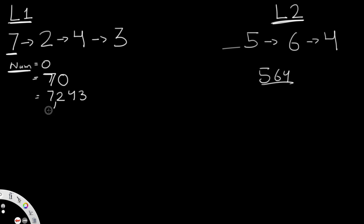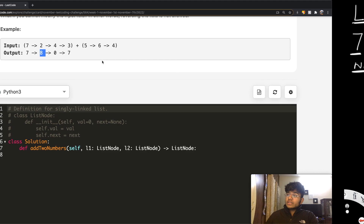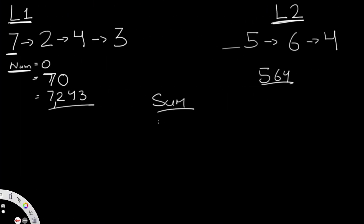So these are our two numbers. Now we need to find the sum. Adding them is pretty simple — num1 plus num2 gives us a value of 7,807.